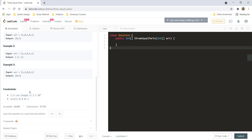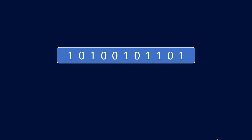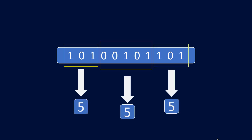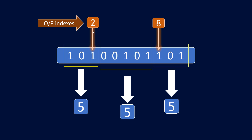Let's take one of the examples and see how we can solve this question. We need to divide this array into three different parts that can have the same number. It becomes these three parts which each depict the number 5. The output will be the last index of the first partition and the first index of the last partition, so here the output will be 2, 8.